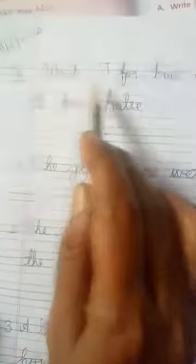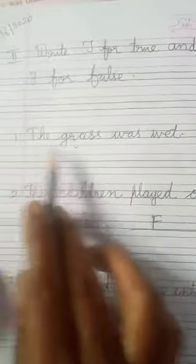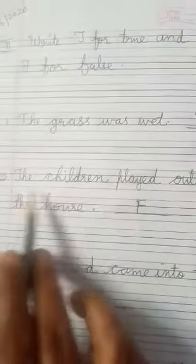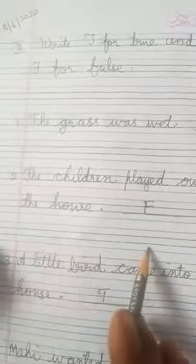See, first of all you will put the date 11.06.2020. Then you will write T for true and F for false. Then you will write the sentence here: The grass was wet and T. Then you will leave one line and you will write number 2. You will leave one line, number 3, number 4. Like that, okay?